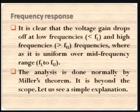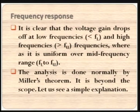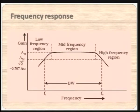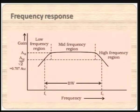Let us see how this alters the trend. It is clear that the voltage gain drops off at low frequencies — less than FL, the lower cutoff frequency — and at high frequencies greater than FU, whereas it is uniform over the mid frequency range between FL and FU. The analysis is normally done using Miller's theorem, but that is beyond the scope, so let us see a simple explanation. This is the frequency response curve: the lower frequency region, the upper frequency region, and in between we have the bandwidth.